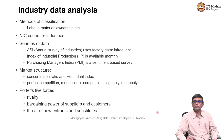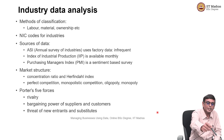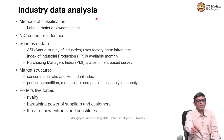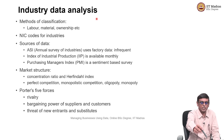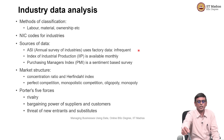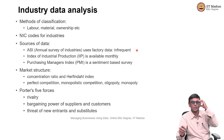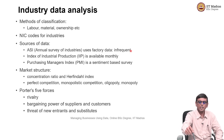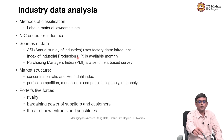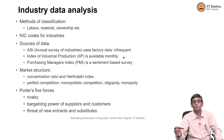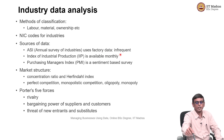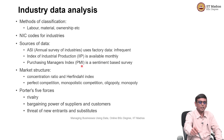Then we moved on to analyzing the industry. There are various methods of classification like labor, material, ownership, etc., and there are NIC codes assigned to industries. There are many sources from which you can get data about industries. The Annual Survey of Industries uses factory data — the factory inspector goes and collects information; it is infrequent but reliable. Then there is the Index of Industrial Production, which is available monthly — high frequency and quite valuable for figuring out what is going on in the industry.